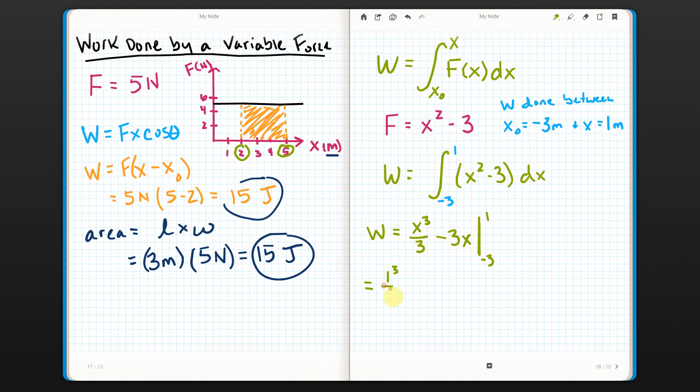So I get 1 cubed over 3 minus 3 times 1. And I subtract. I do the same thing, but with the bottom number. So I get negative 3 cubed over 3 minus 3 times negative 3. So what I have here is I've got 1 3rd, I've got minus 3. This is interesting. Well, negative 3 cubed is negative 27. But then I divide by 3. So I get negative 9. But it's minus a negative 9. So it ends up being plus 9. And over here, I've got negative 3 times negative 3 is a positive 9. But I've got minus that whole thing. So I end up with minus 9.